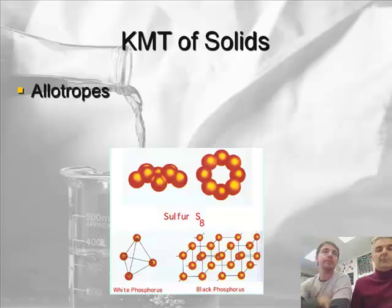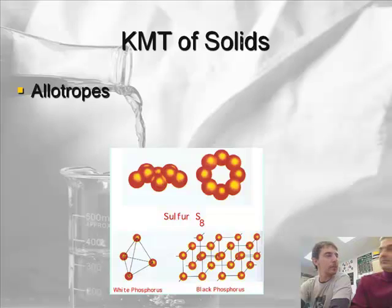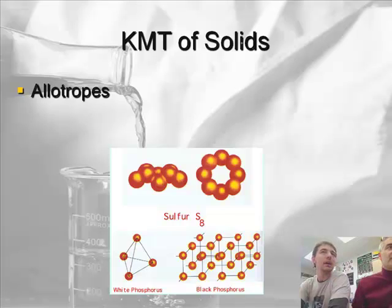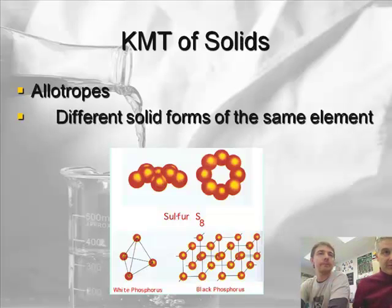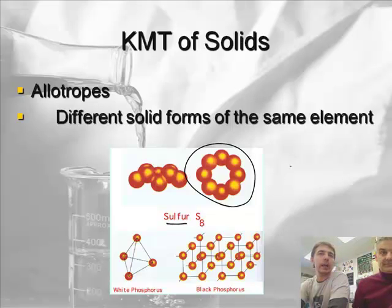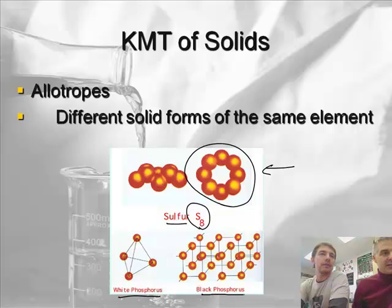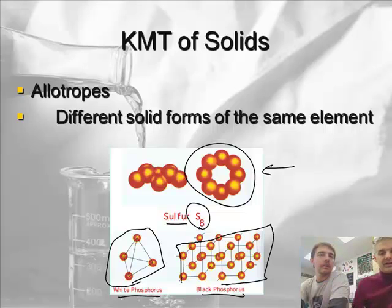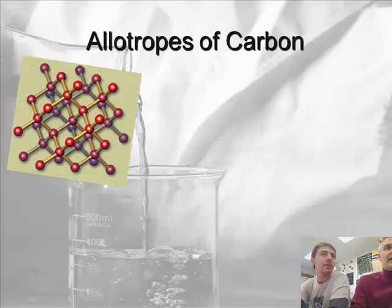We can also talk about solids. There's something called an allotrope — it's when you have a solid that is the same element but has a different configuration and sometimes a different formula. So different solid forms of the same element. A classic example is sulfur, which can have an eight-part ring structure, giving us S8. Then there's white phosphorus and black phosphorus — white phosphorus has a tetrahedral arrangement, while black phosphorus has a cubic arrangement. Same elements, just arranged differently.